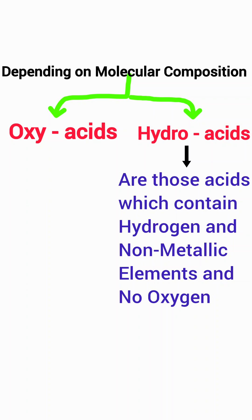Hydro acids are those acids which contain hydrogen and a non-metallic element, with no oxygen. For example, hydrochloric acid and hydrobromic acid.